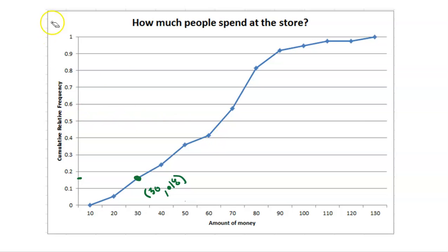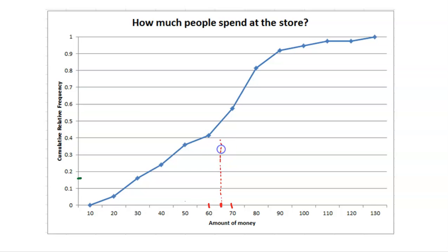So every single dot represents a percentile. You don't even have to be on a dot. For example, what about $65? I can draw a line up here — there's no tick mark there, but that's 60, and this is 70 — so here's 65. There's no dot there, but I can make a dot there. It looks like $65 is the 50th percentile, which is actually the median. So the median is $65. 50% of people spent less than or equal to $65.